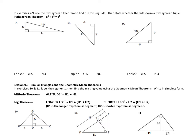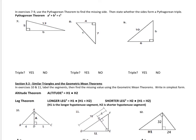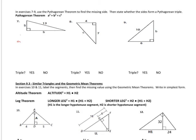Problems 7 through 9 want us to use the Pythagorean theorem to determine if we have a Pythagorean triple. A Pythagorean triple means a² + b² = c². In number 7, they give us two of the sides. We set up: a² + b² = c², with a = 5 and c = 13.